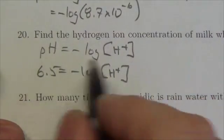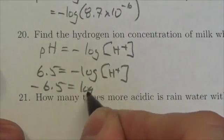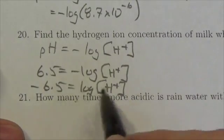This is a matter of undoing this. Bring the negative over, so negative 6.5 equals the log of the hydrogen ion concentration.